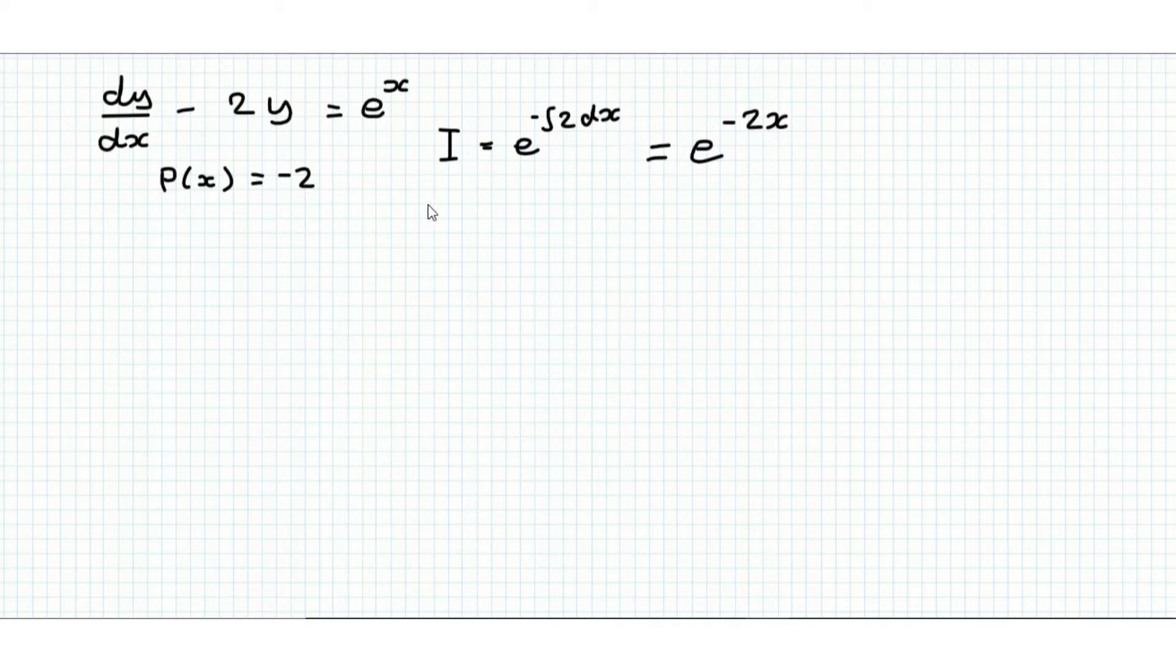Now we multiply this whole equation through. So we get e to the minus 2x times dy/dx minus 2e to the minus 2x times y equals e to the minus x.